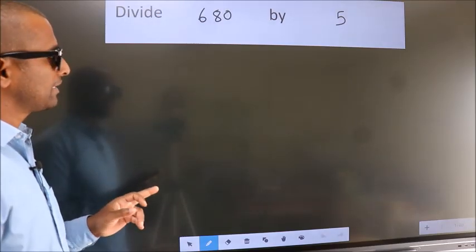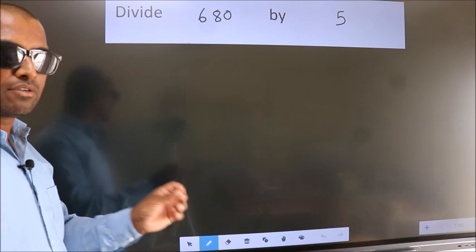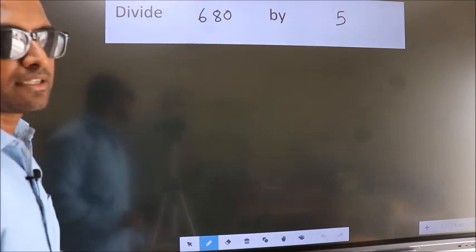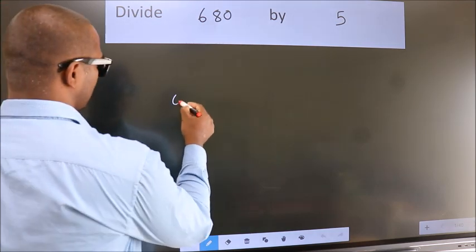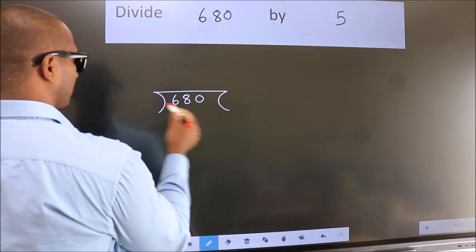Divide 680 by 5. To do this division, we should frame it in this way. 680 here, 5 here.